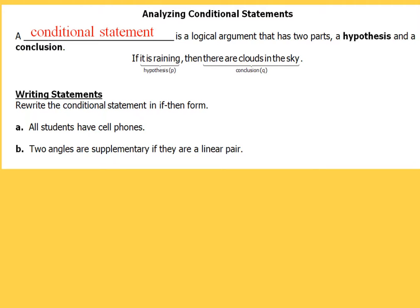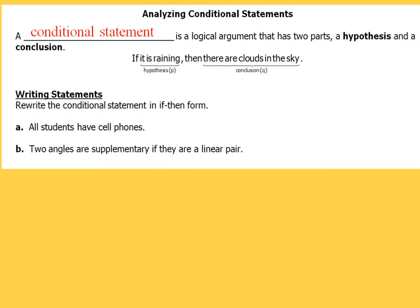The hypothesis is going to be the part that is right after the word 'if.' The conclusion is going to be the part that's right after the word 'then.' The hypothesis is going to be denoted by the letter p, and the conclusion is going to be denoted by the letter q.